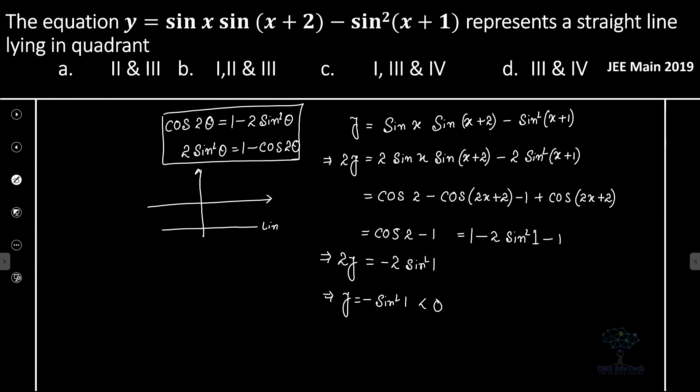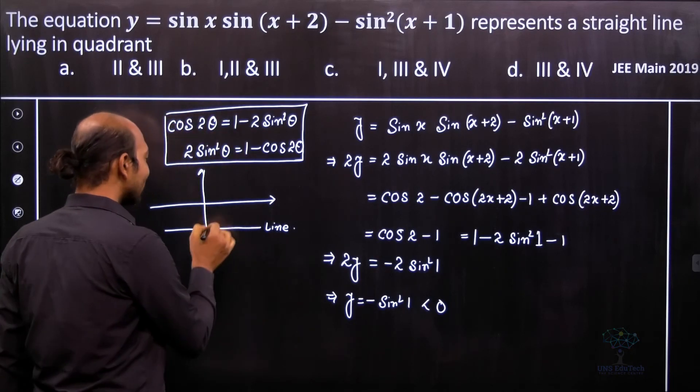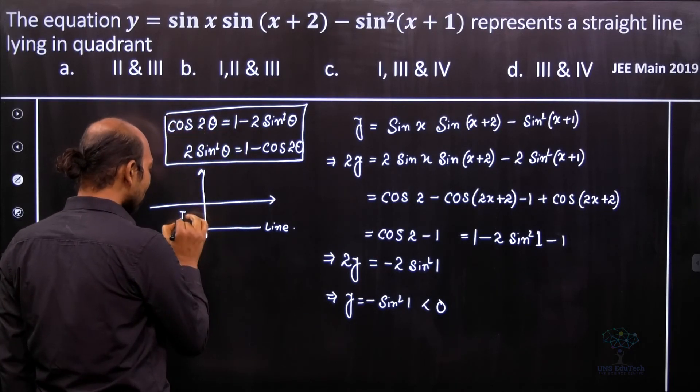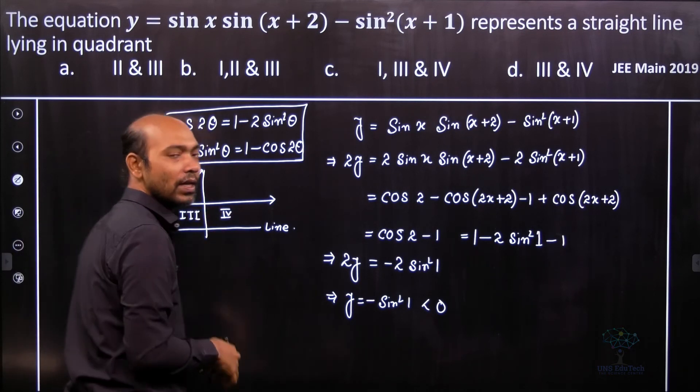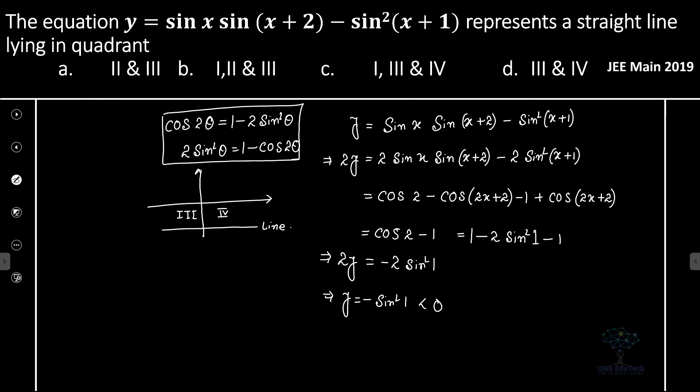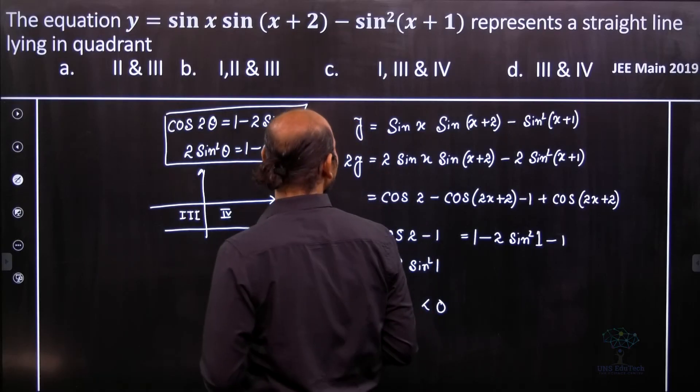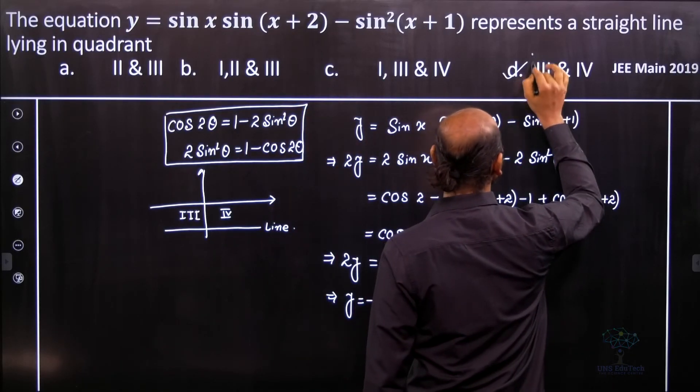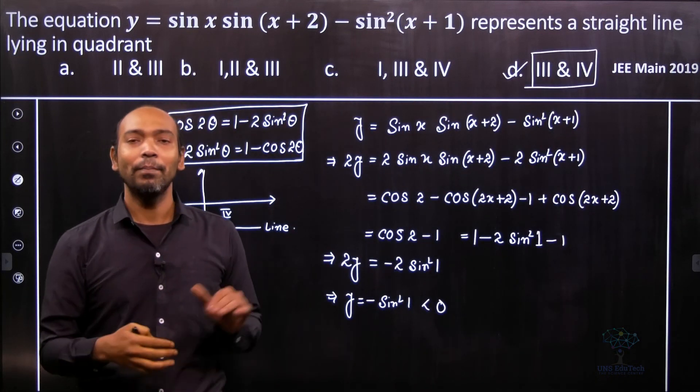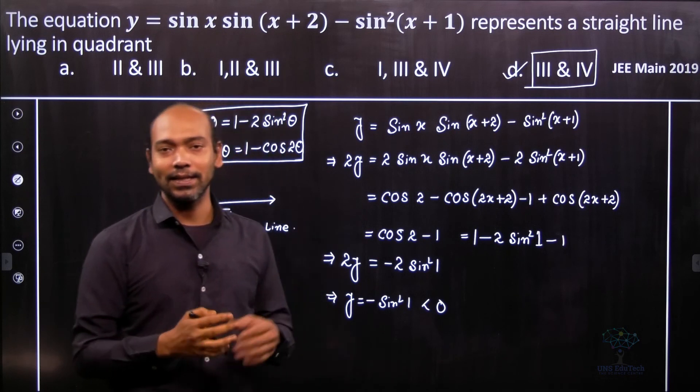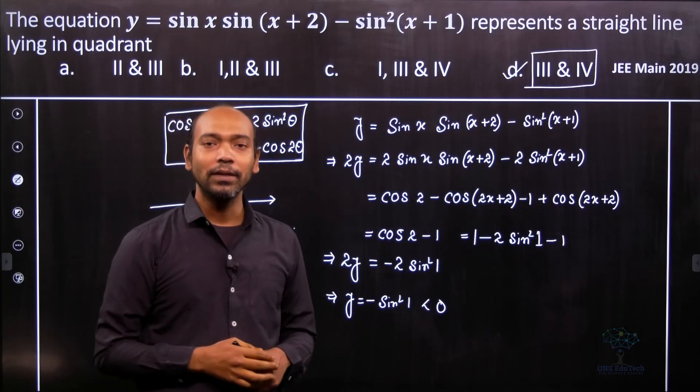Using coordinate geometry concepts, we see this is the required line. Since it's negative sin²1, which quadrant is it? First and second are above, third and fourth are below. It lies in the third and fourth quadrants. Therefore option d for this problem is the correct choice. It's a straight line parallel to the x-axis.